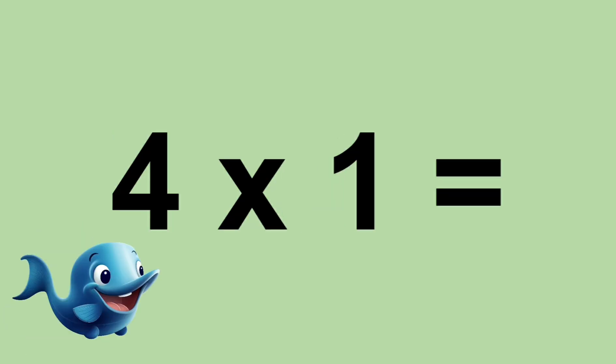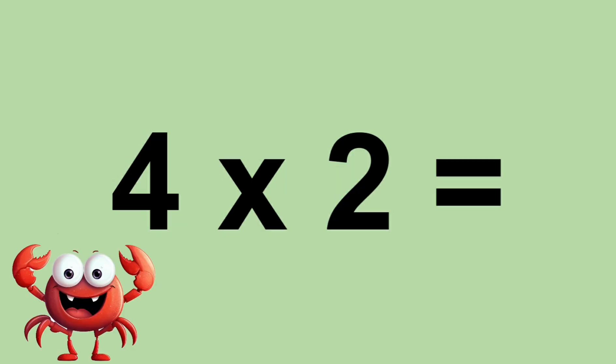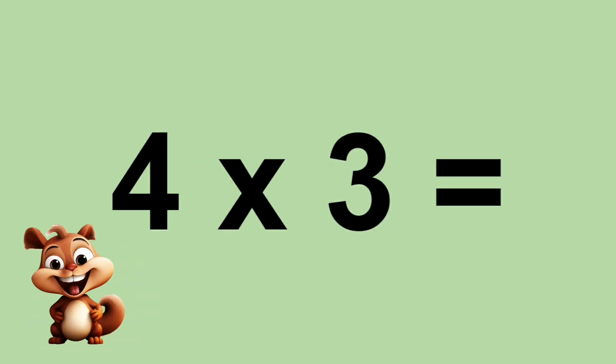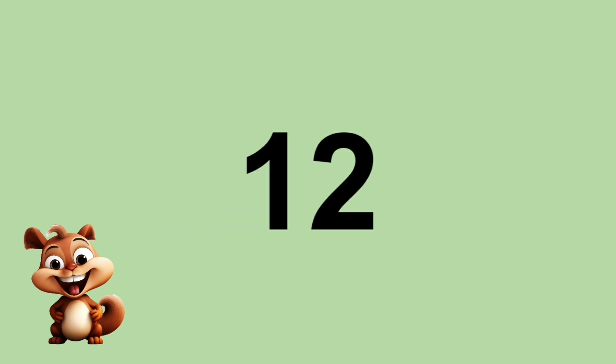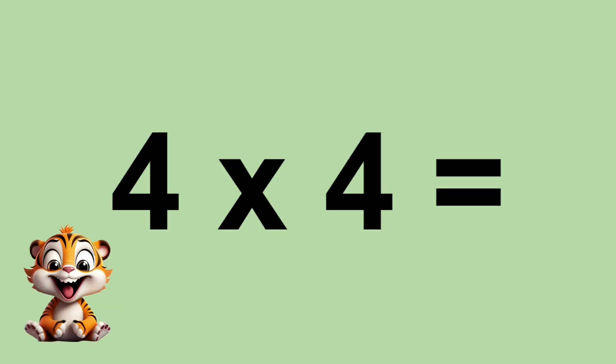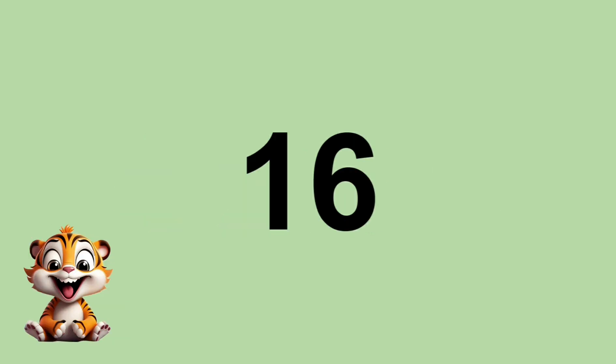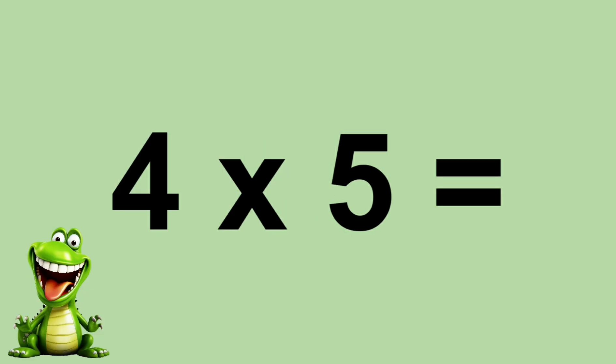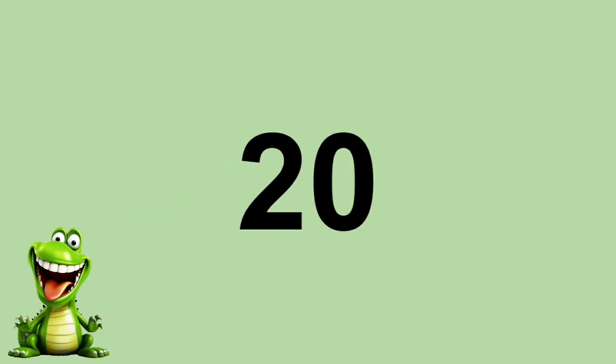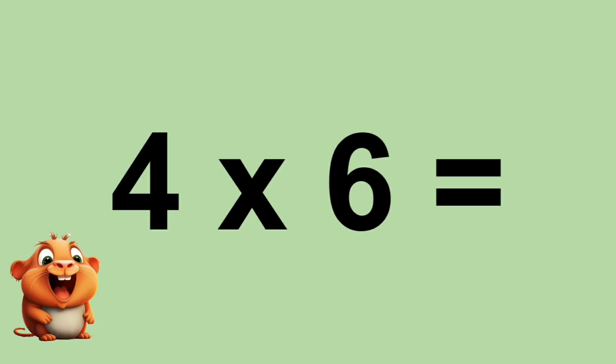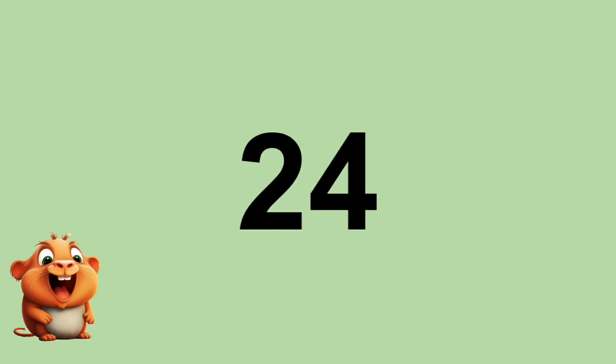Four times one equals four. Four times two equals eight. Four times three equals twelve. Four times four equals sixteen. Four times five equals twenty. Four times six equals twenty-four.